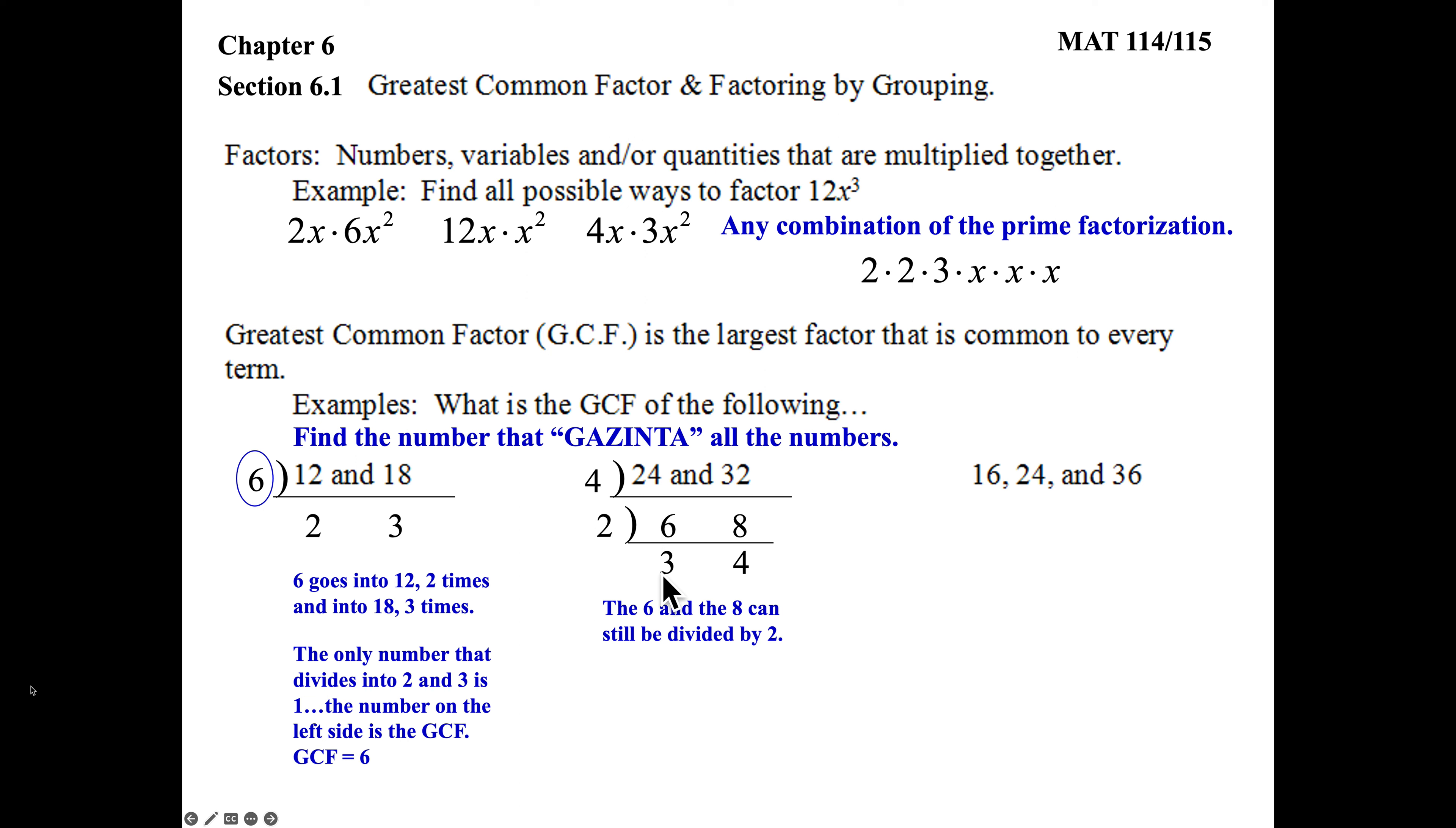When we finally get to our bottom row, where there is no more common factors besides the 1, then all the numbers on the left side get multiplied together, and that's our GCF. It's an 8.